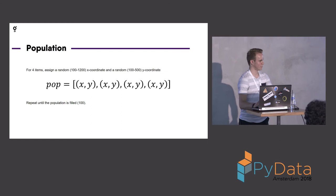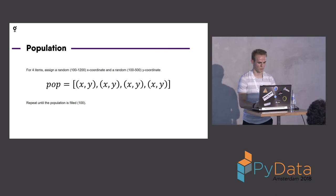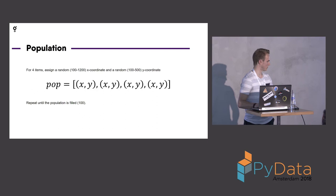How do you initialize a population? Random. The canvas is 1200 by 628. So if you have four items, they are pasted between 100 and 1100 for the x-coordinates, and between 100 and 500 for the y-coordinates, so that they are not off canvas. And you repeat the cycle until the population is filled — for example, 100.